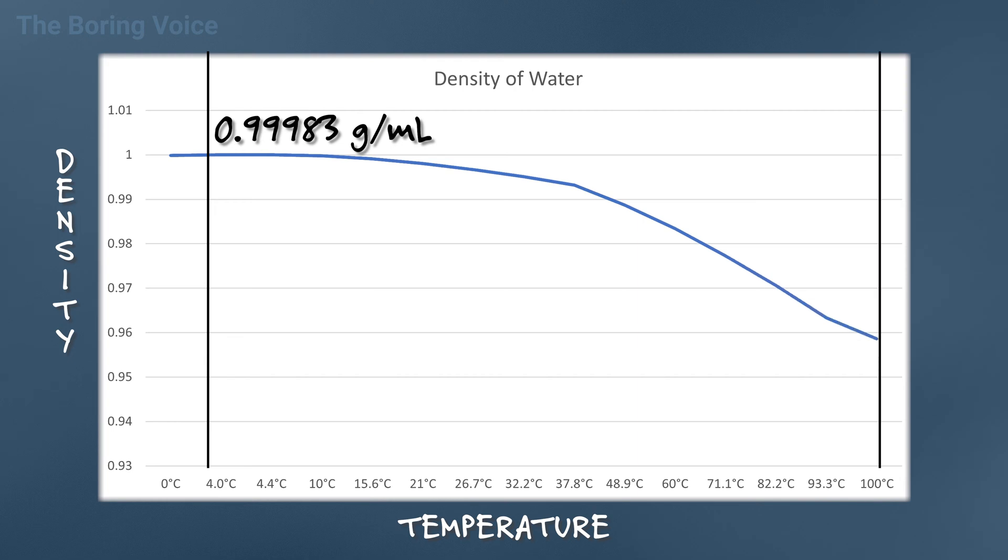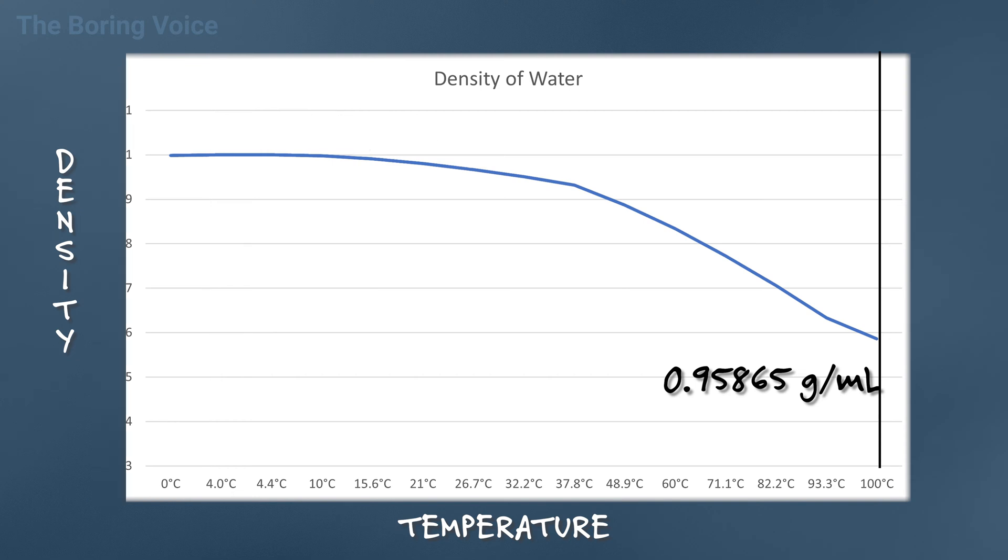When water reaches 100 degrees Celsius, it has a density of 0.95865 grams per milliliter. That's a difference of 4 hundredths of a gram per milliliter. This phenomenon is known as thermal expansion.